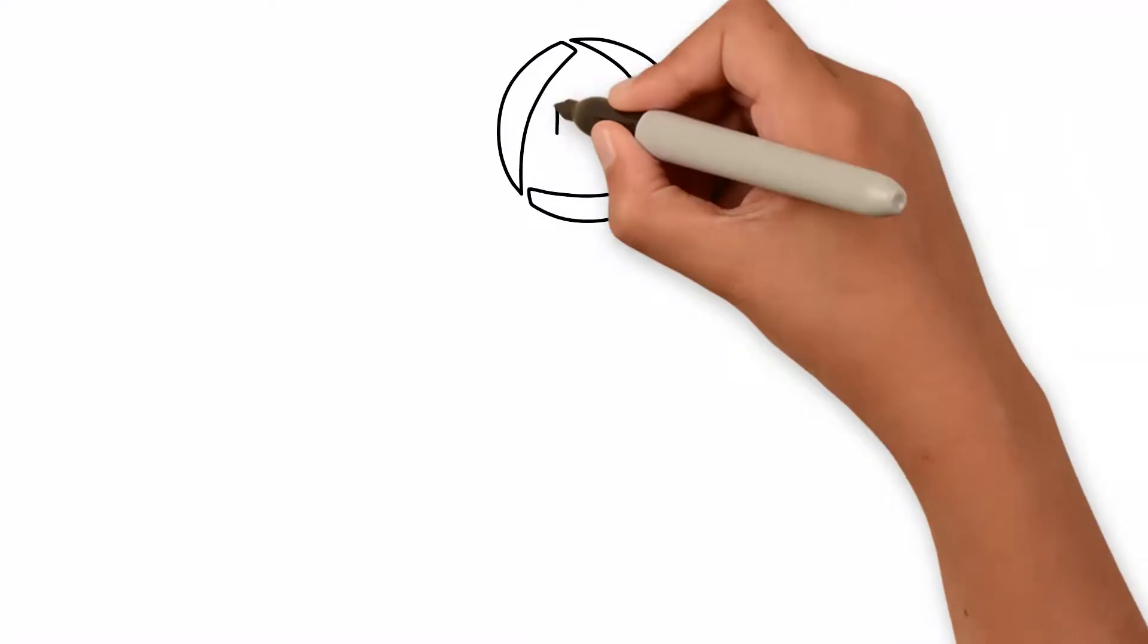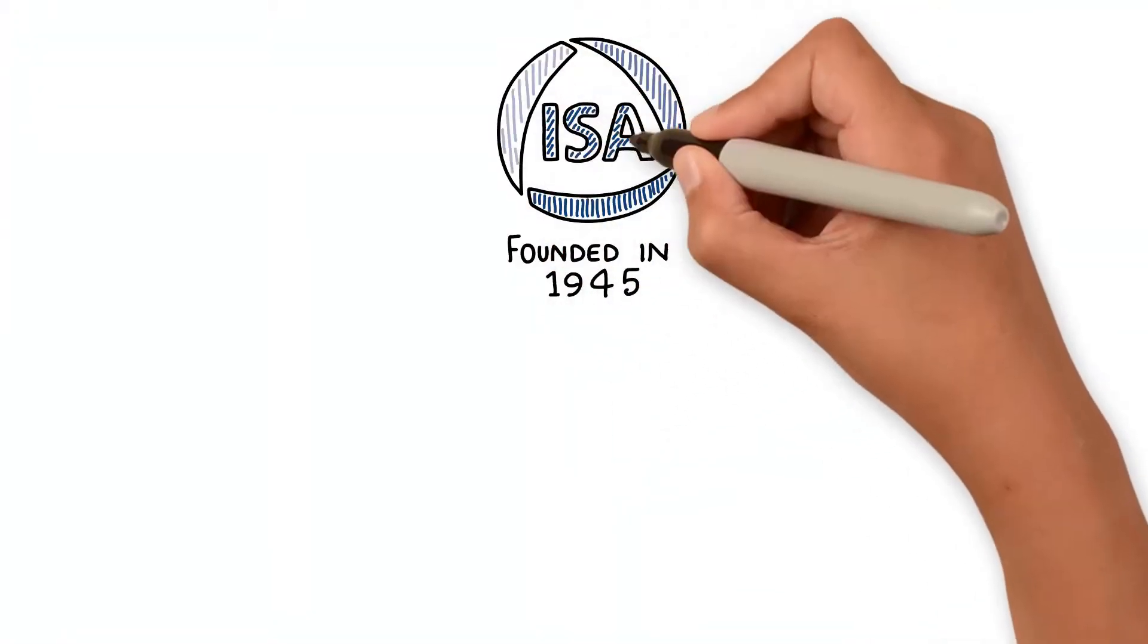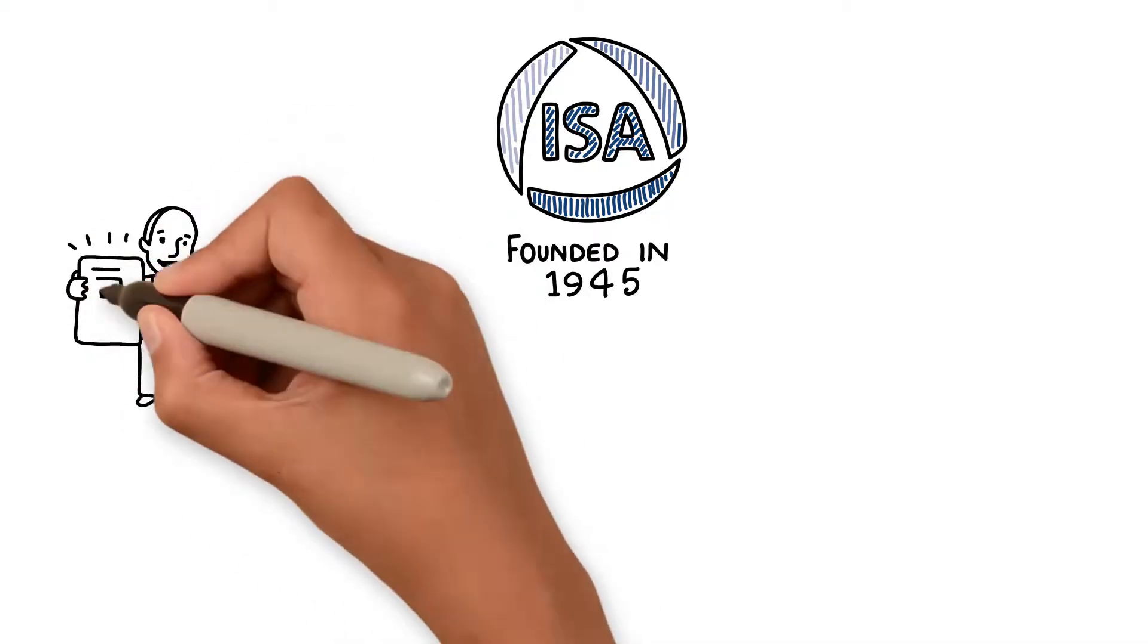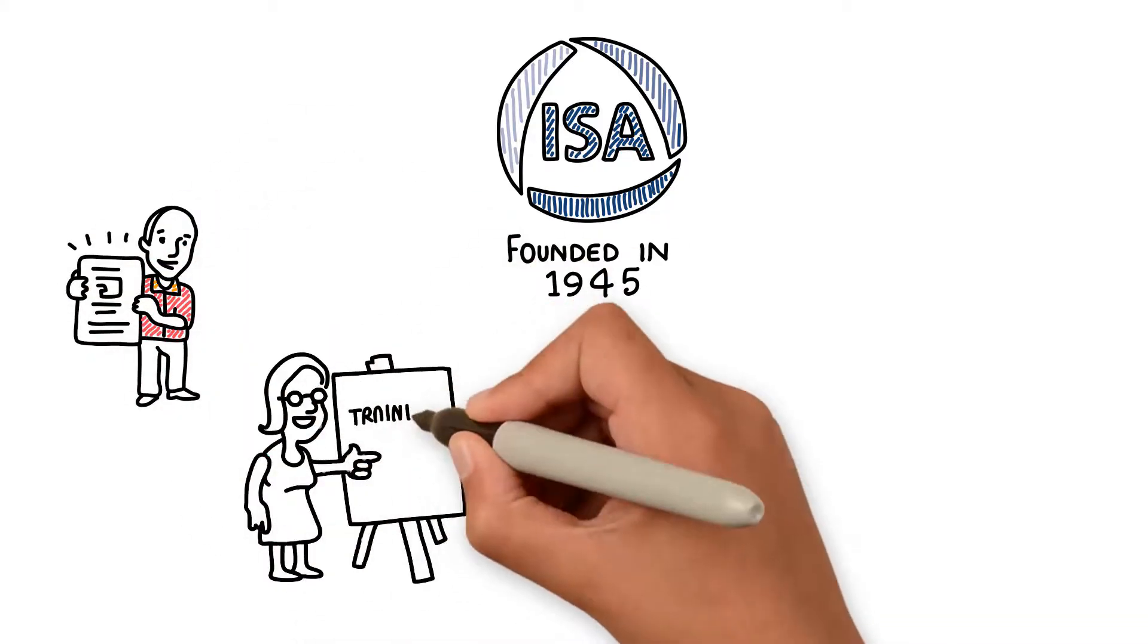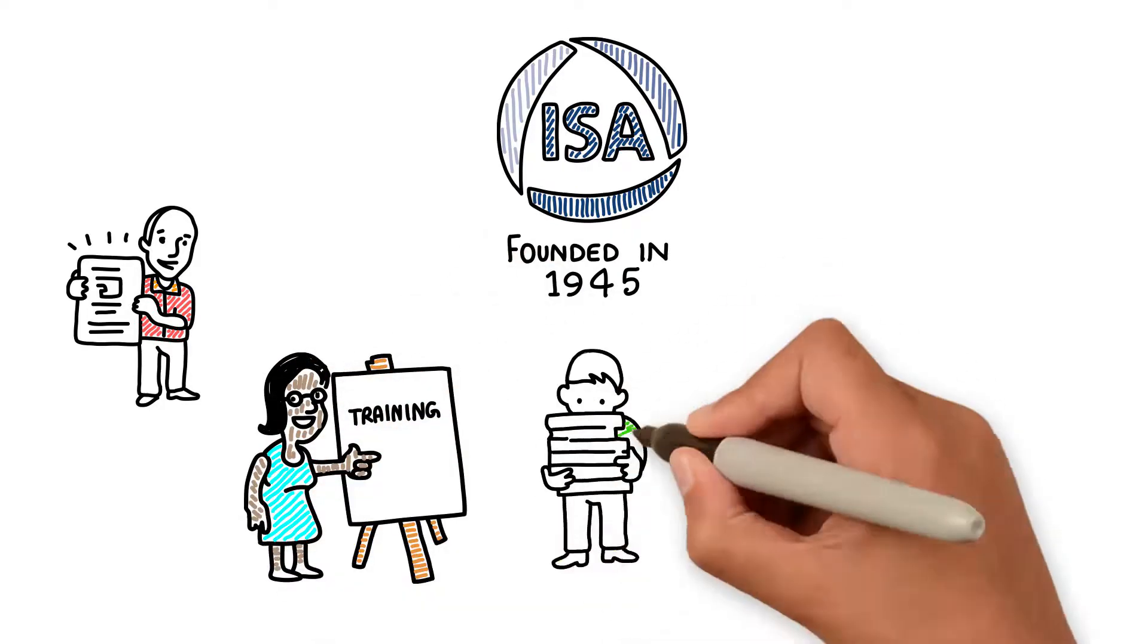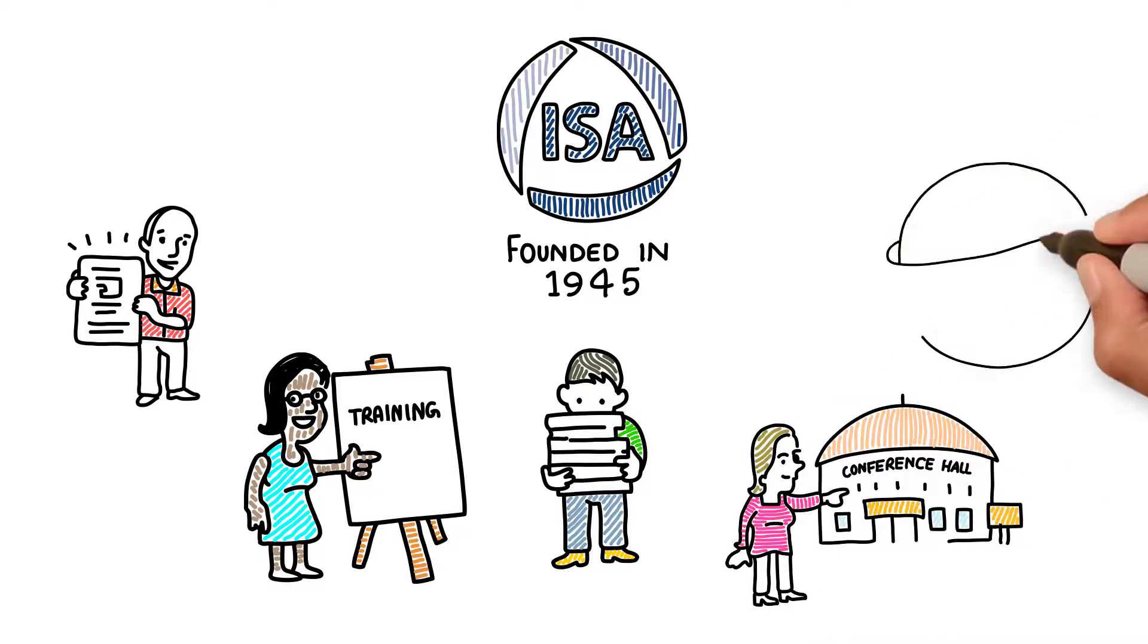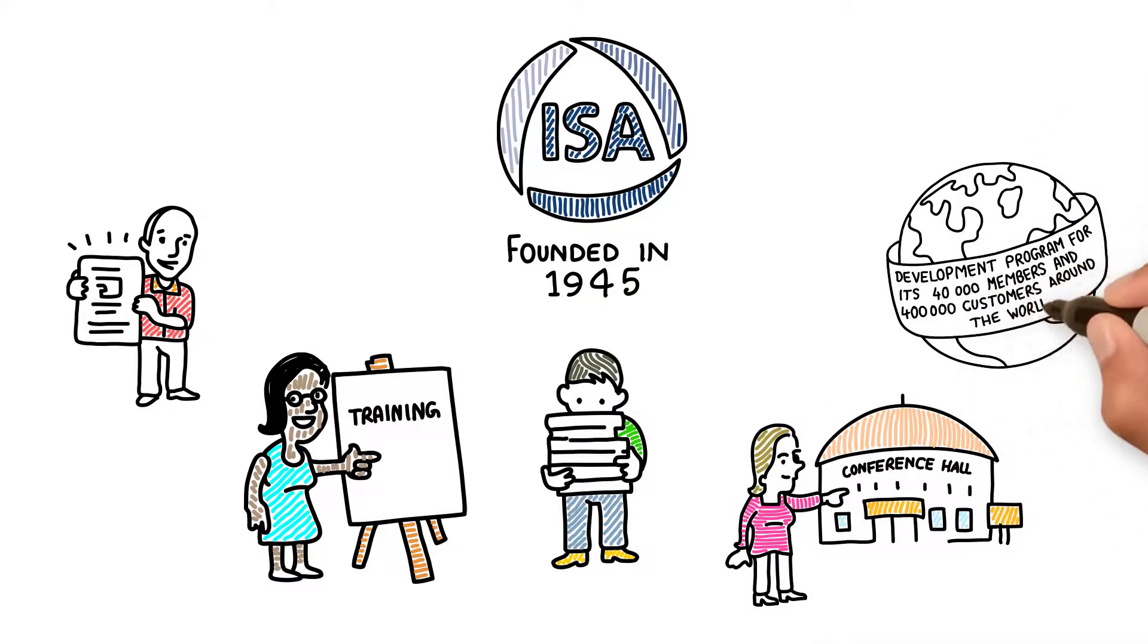Founded in 1945, ISA develops widely used global standards, certifies industry professionals, provides expert-led, hands-on standards-based education and training, publishes books and technical articles, hosts conferences and exhibits, and provides networking and career development programs for its 40,000 members and 400,000 customers around the world.